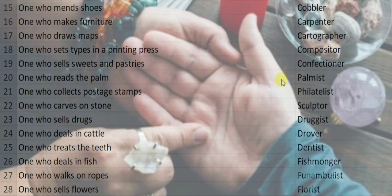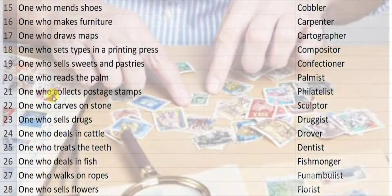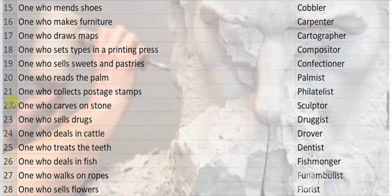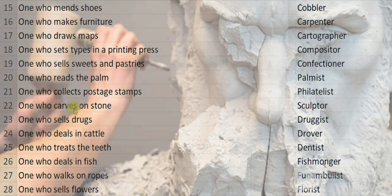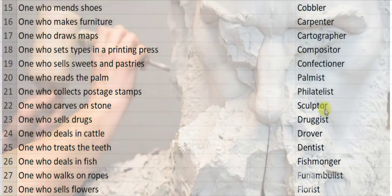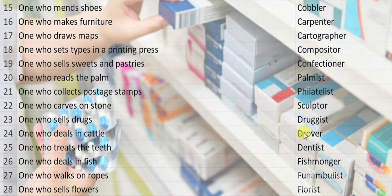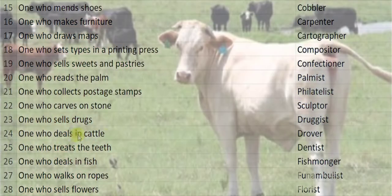One who reads the palm is a palmist. One who collects postage stamps is called a philatelist. One who carves on stone is a sculptor. One who sells drugs is a druggist.